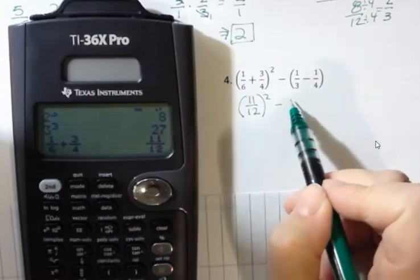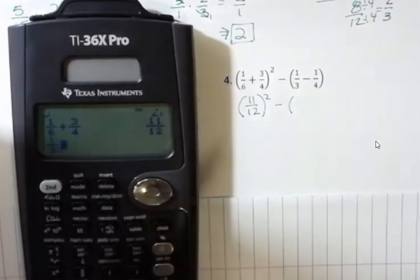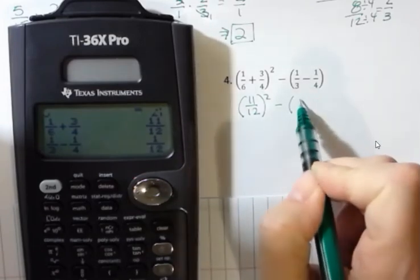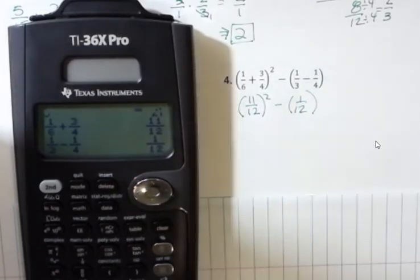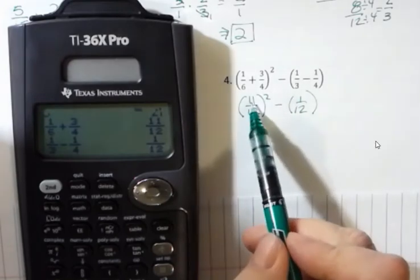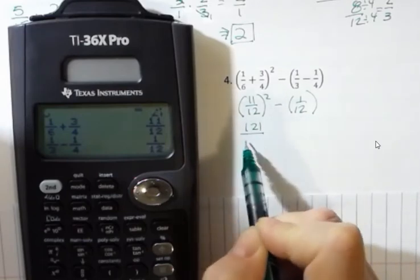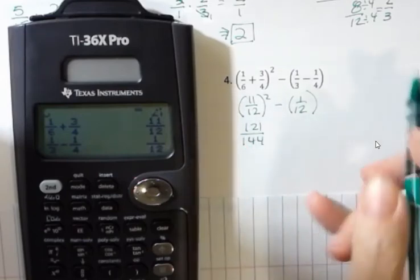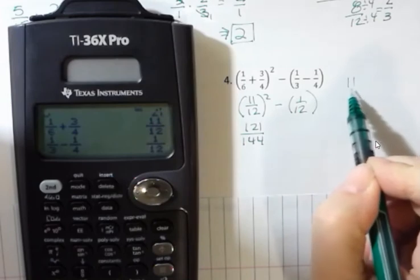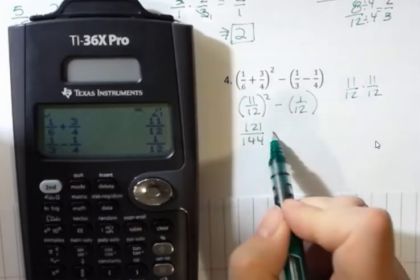I'm doing what's inside the parentheses first. For the second one, 1 third minus 1 fourth, and that's 1 twelfth. Now I'm going to go back and take 11 twelfths to the second power. I know 11 times 11 on the top and 12 times 12 on the bottom. That's 121 over 144. It looks like this, 11 twelfths times 11 twelfths. So 11 times 11 and 12 times 12, and then I have minus 1 twelfth.